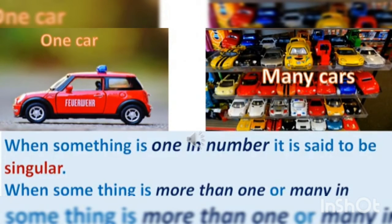Here you can see two pictures. One picture shows one car and the other picture shows many cars. When something is one in number, it is said to be singular. When something is more than one in number or many in number, it is said to be plural.